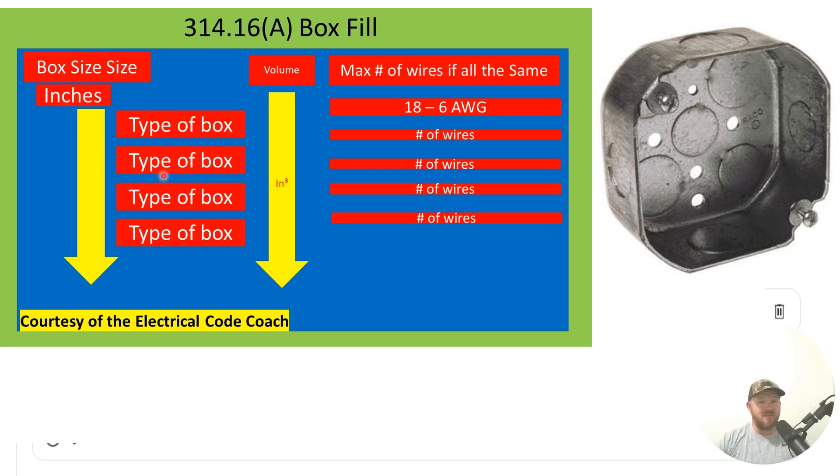Then this next column of the table lists our type of boxes. It lists round and octagonal boxes, then it lists four square boxes, four and 11 sixteenths boxes, and then device boxes. A bunch of different types of metal boxes that we're used to using out in the field.